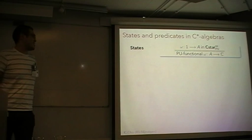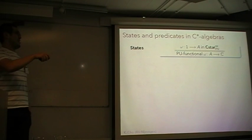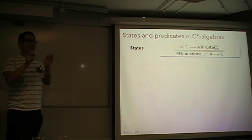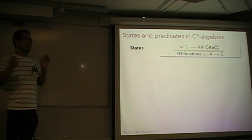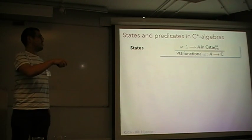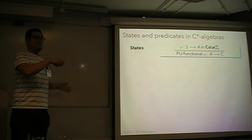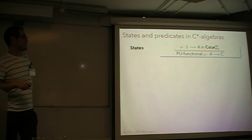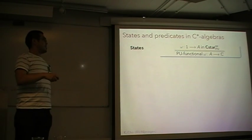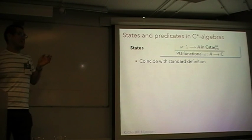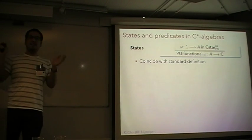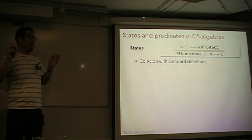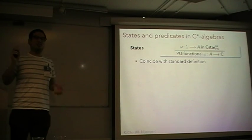So what is a state? A state is by definition this arrow from one in this category, and because we are working in the opposite category, this is a positive unital map from A to ℂ, where A is a C*-algebra. In fact, this coincides with the standard definition of a state of a C*-algebra A in operator theory. So this is good.